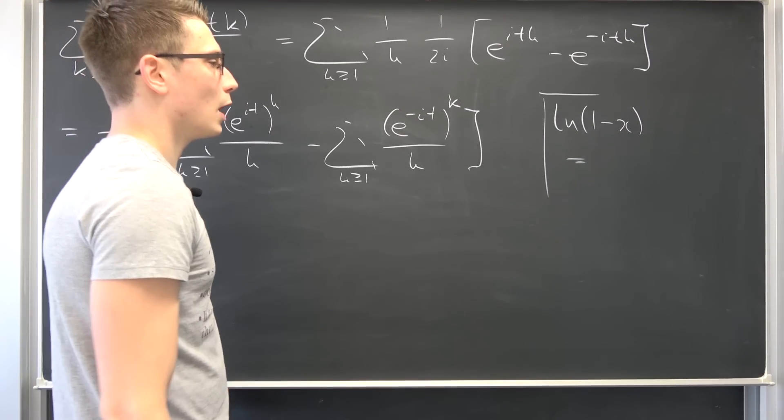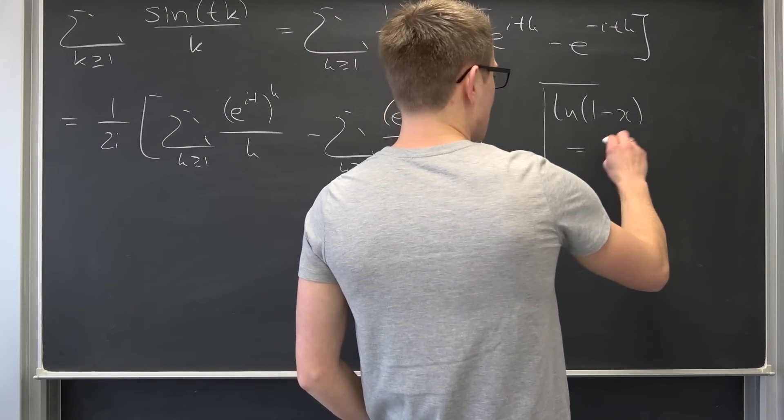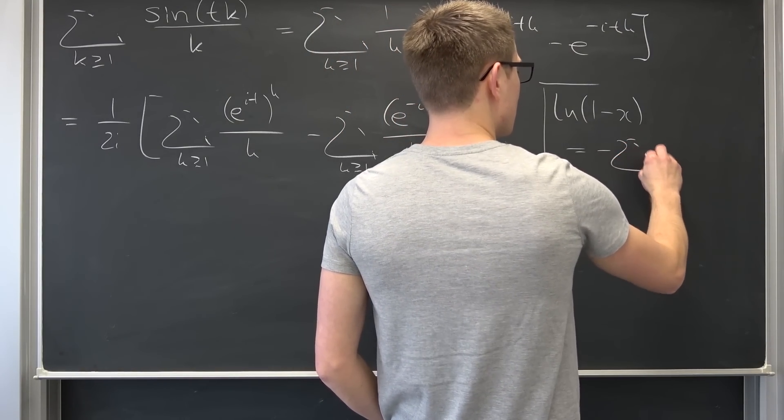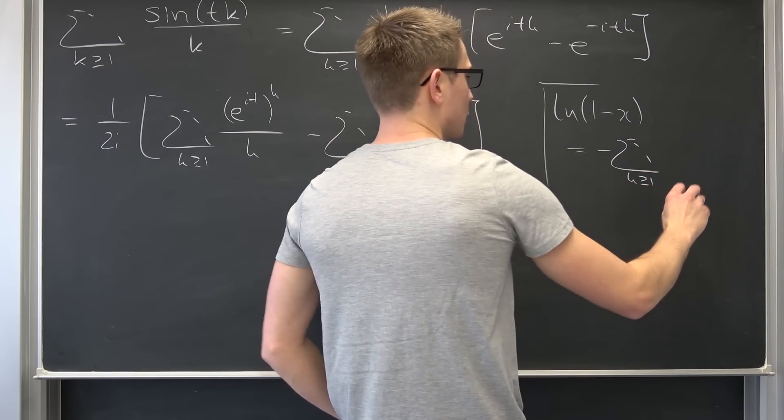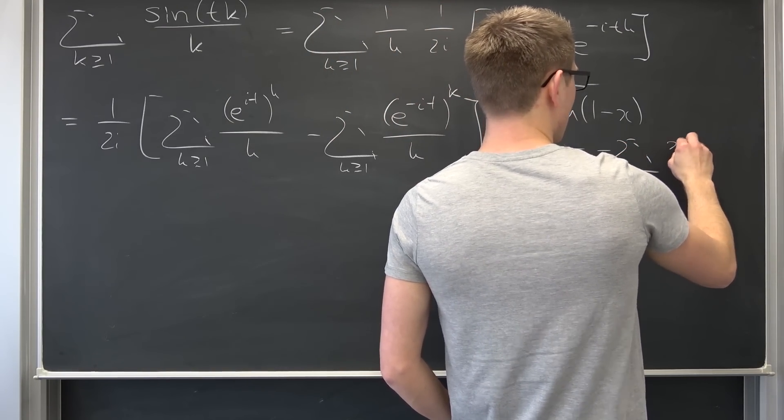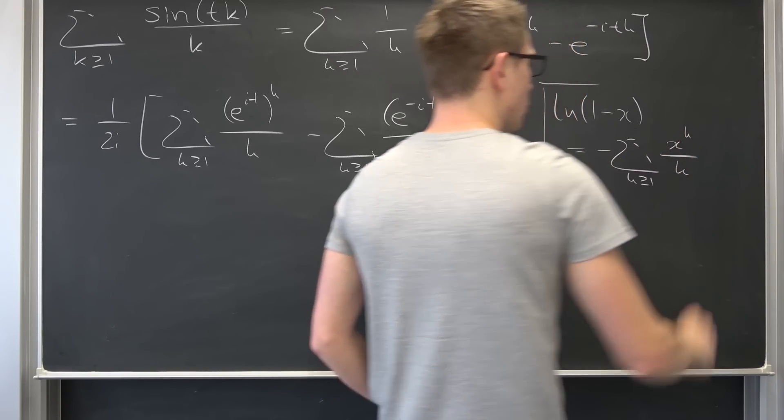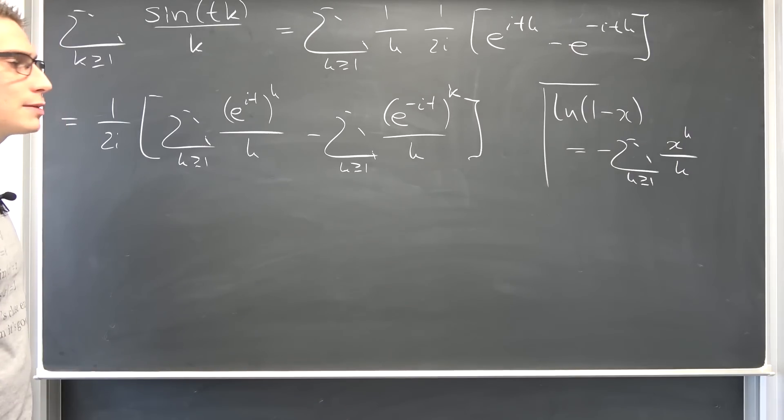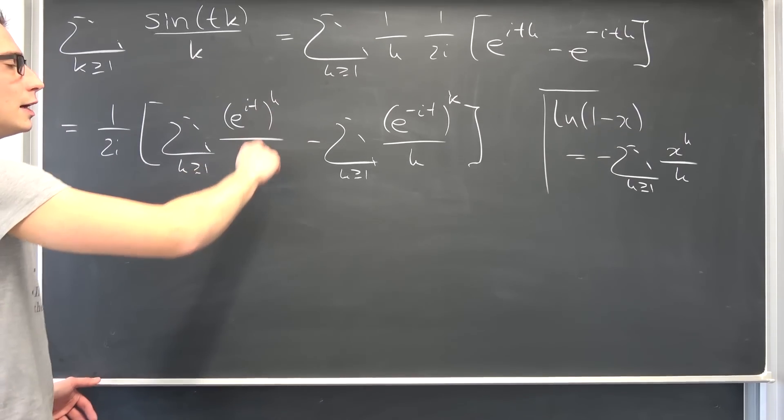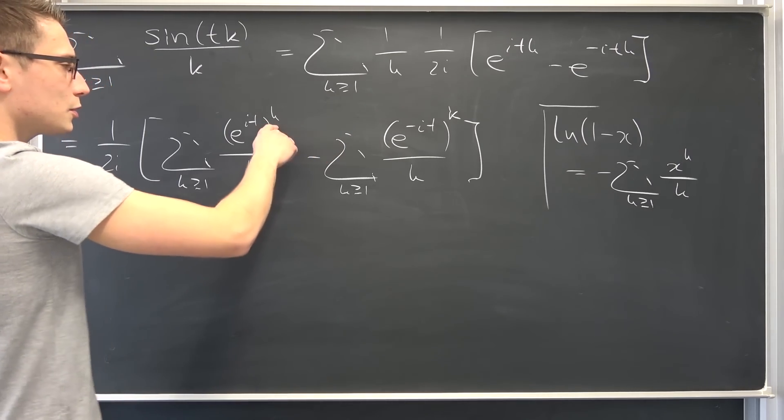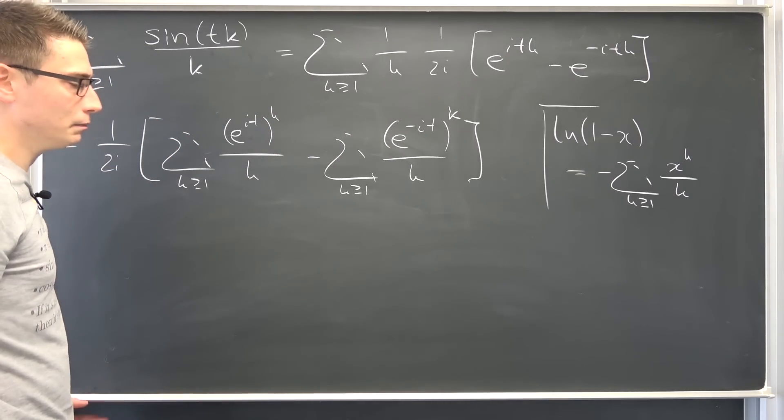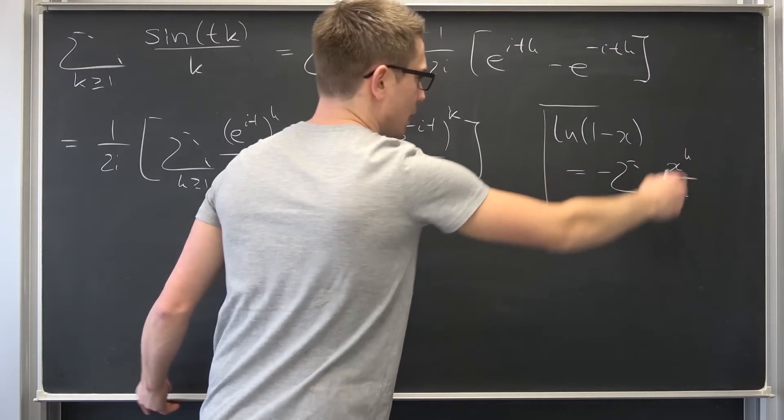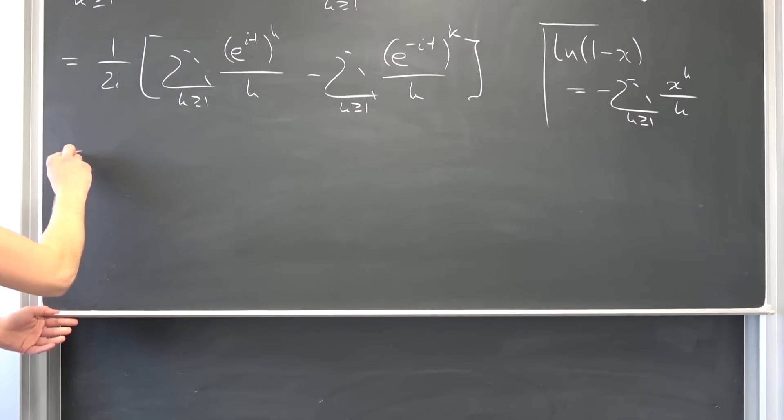If everything is in radius of convergence and the modulus of e to the it is always less or equal to 1, then we are going to have that this is negative the infinity sum k being greater or equal to 1 of x to the kth power over k. And I hope you can see some similarities. This is why I have basically brought this exponent to the kth power to the outside.